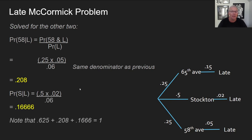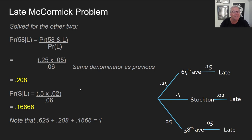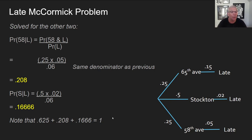Then solving for Stockton gives 0.16666. So here are the probabilities for all three answers: he's late and came by way of 65th — 0.625; by way of 58th — 0.2; by way of Stockton — 0.166. Notice that all of those add up to 1, which is 100% of the late cases. He always comes by way of one of those three options, so those are exhaustive and complete. We just solved three problems in that case.